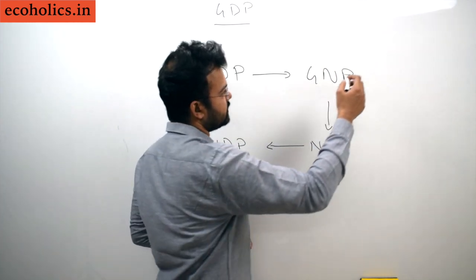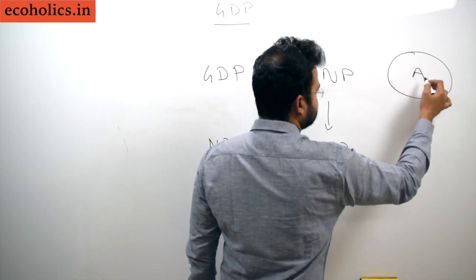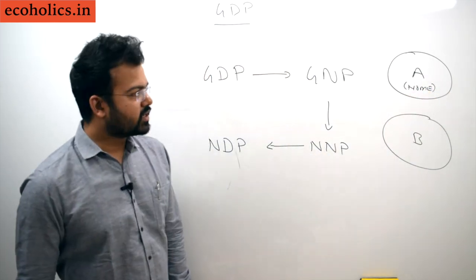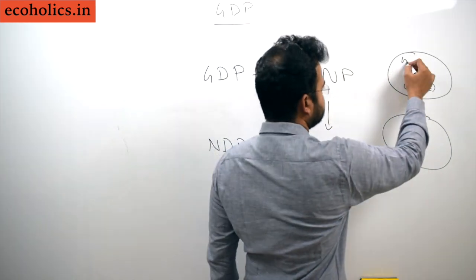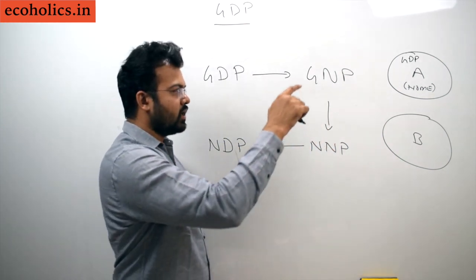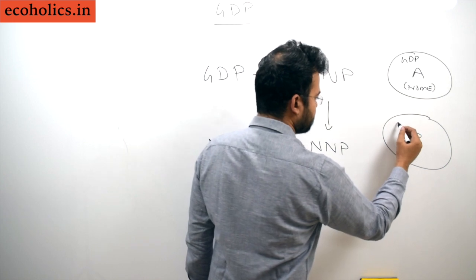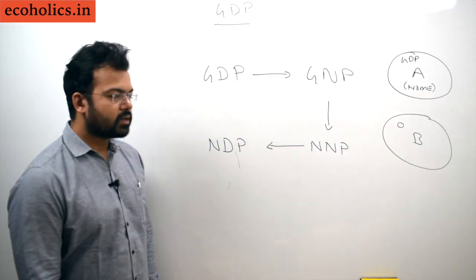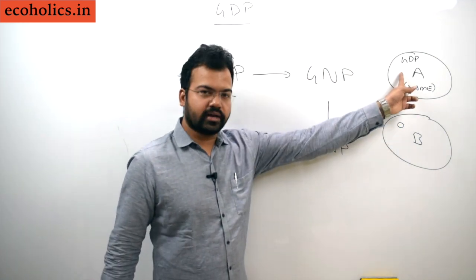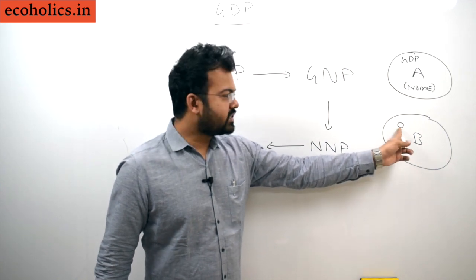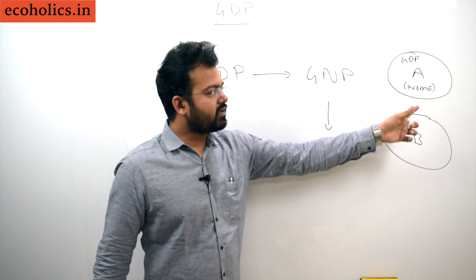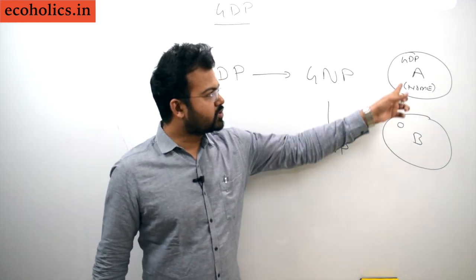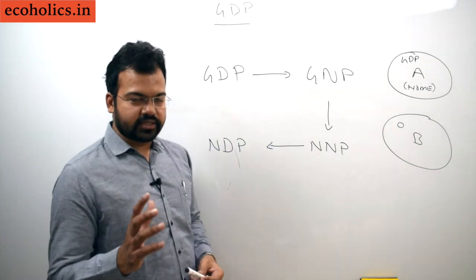To understand the difference between domestic and national: suppose territory A is the home country and territory B is another country. A person working in country A contributes to GDP of A. But a citizen of A working in country B will not be included in GDP of A — their contribution is in GDP of B. However, since they are a national of country A, their contribution will be included when calculating GNP of country A.